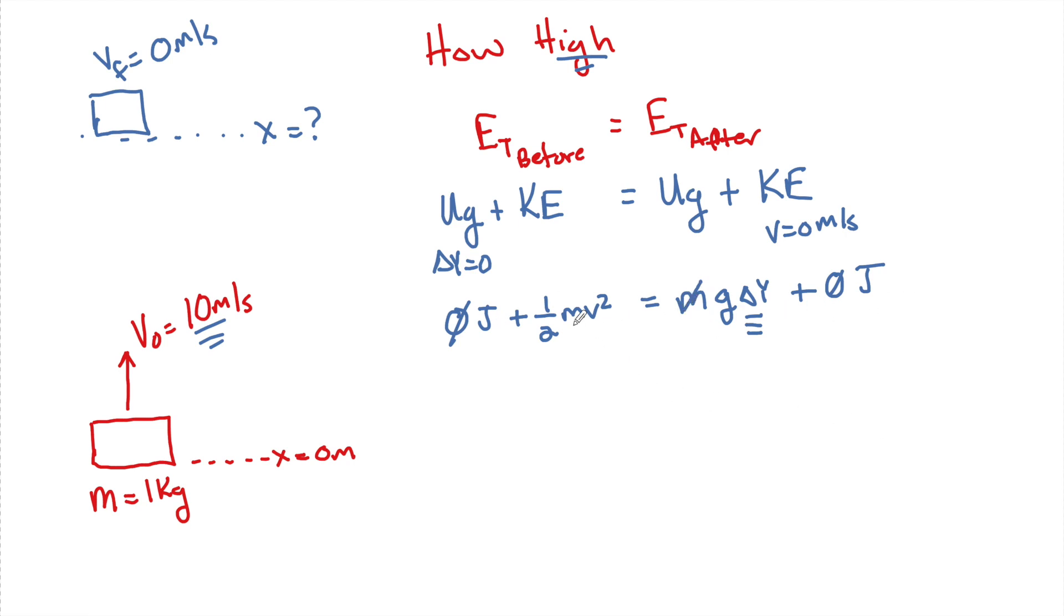So now when we have our 0s, once again, we can get rid of our M's. And we can say that 1 half V squared, initially, equals G delta Y. So that's it nice and clean. After we do that, we can say that this is going to be equal to 1 half V squared divided by G. That's going to equal delta Y.